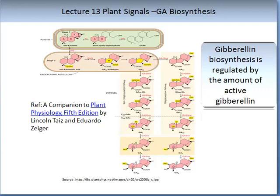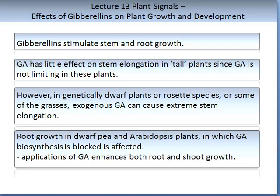Gibberellins can stimulate stem and root growth. GA has little effect on stem elongation in tall plants since GA is not limiting in these plants. However, in genetically modified dwarf plants, rosette species, or some grasses, GA applied to the plant can cause extreme stem elongation. Root growth in dwarf pea and Arabidopsis plants in which GA biosynthesis is blocked is also affected. Applications of GA enhance both root and shoot growth.